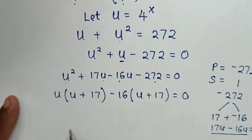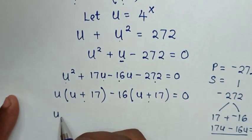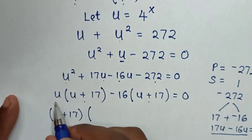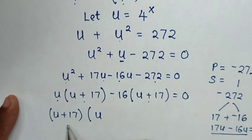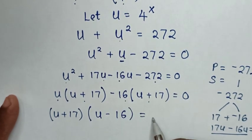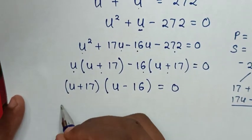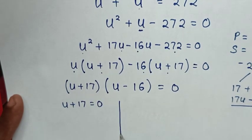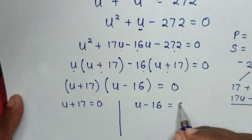Now (u plus 17) is common, so we take (u plus 17) out of the bracket: (u plus 17)(u minus 16) equals 0. We now have two solutions: the first solution is u plus 17 equals 0, and the second solution is u minus 16 equals 0.